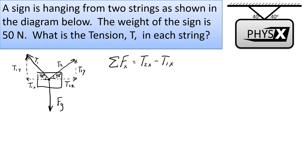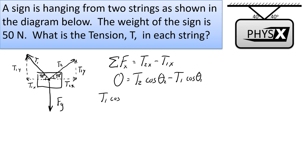We can add T1 cosine theta to both sides: T1 cosine theta equals T2 cosine theta. It's the same angle, so cosine theta cancels, and we've just proven what we kind of already knew: T1 equals T2. These two tension vectors are equal to each other.